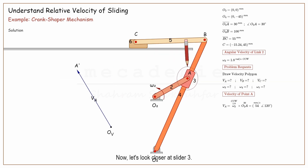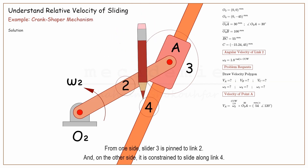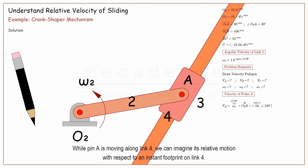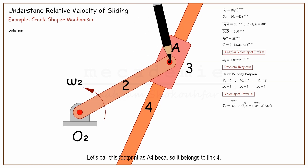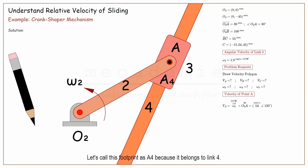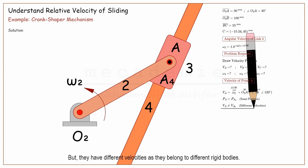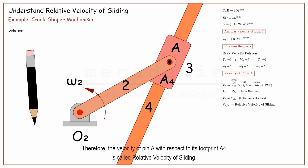Now let's look closer at slider 3. From one side, slider 3 is pinned to link 2, and on the other side it is constrained to slide along link 4. While pin A is moving along link 4, we can imagine its relative motion with respect to an instant footprint on link 4. Let's call this footprint A4, because it belongs to link 4. Pin A and its footprint A4 are instantly at the same position, but they have different velocities as they belong to different rigid bodies. Therefore, the velocity of pin A with respect to its footprint A4 is called the relative velocity of sliding.